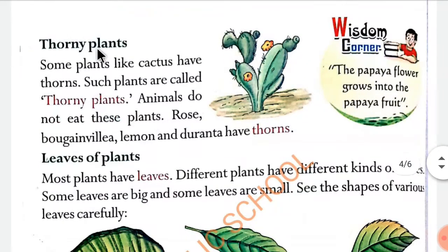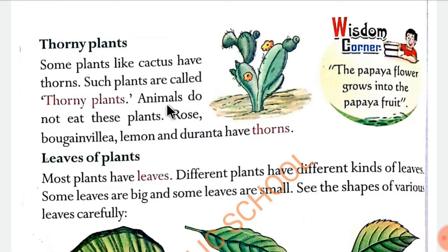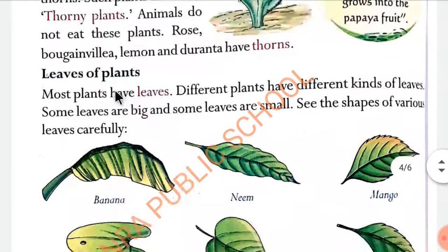Thorny plants — aise plants jinke oopar kaante hote hai. Some plants like cactus have thorns, kuch plants jaise cactus unke oopar thorns hote hai. Such plants are called thorny plants. Animals do not eat these plants — janwar inko nahi khaate hai. Rose, bougainvillea, lemon and doranta have thorns — in sabi ke thorns hote hai.